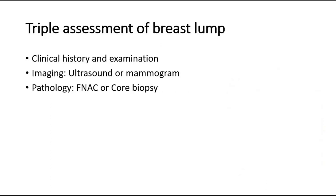We might also be asked how we would approach the patient for a breast lump. To investigate, we will need the triple assessment of the breast lump, divided into three parts: first, clinical history taking and physical examination; second, imaging — which can be ultrasound or mammogram depending on the patient's age (younger patients use ultrasound, older patients use mammogram preferably); and third, pathology — which is fine needle aspiration cytology (FNAC) or core/true-cut biopsy.